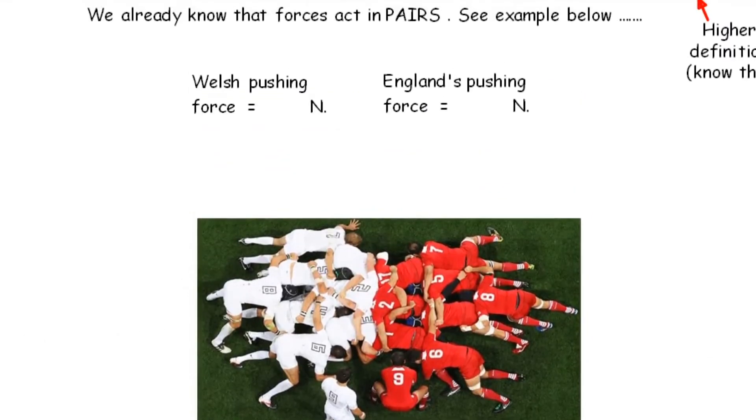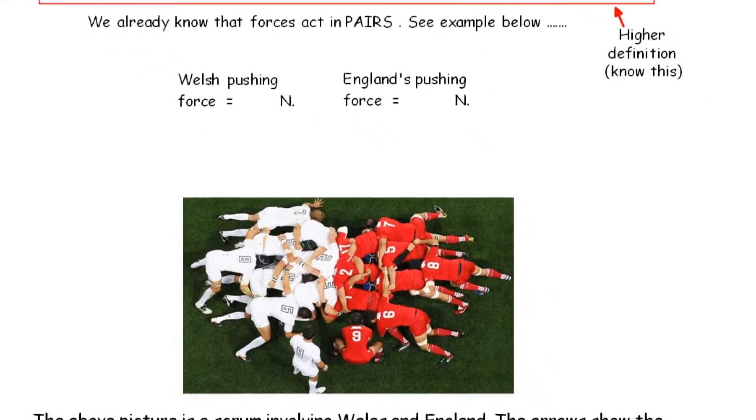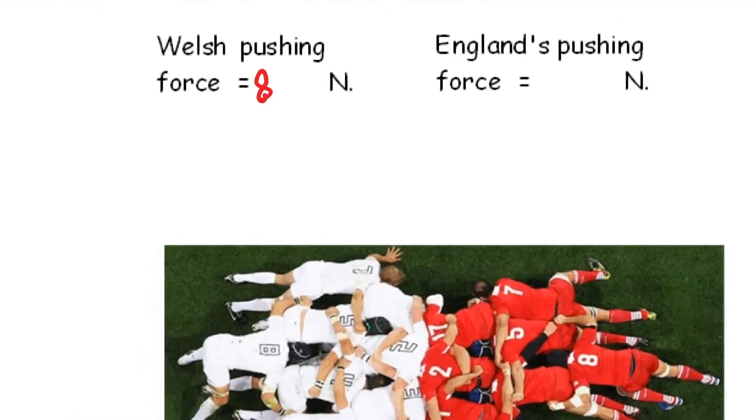So the first example you see there, you've got Wales packing down against England and the scrum is stationary. We can see that because the scrum half is about to put the ball into the scrum. Could be Mike Phillips, could be Gareth Davis. Whatever the Welsh pack are pushing with, the English pack are pushing back with exactly the same force. Let's say they are pushing with a force of 8,000 newtons, then England would be pushing 8,000 newtons.